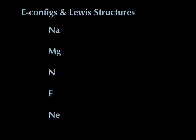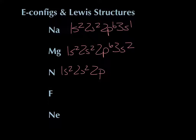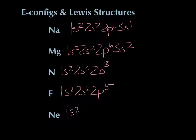Here are the electron configurations. Sodium is 1s² 2s² 2p⁶ 3s¹ — it's in the first column of the third row, so it ends in s¹. Magnesium is 1s² 2s² 2p⁶ 3s² — right next to sodium, so it has two electrons in the s energy level. Nitrogen has only seven electrons: 1s² 2s² 2p³. Fluorine is 1s² 2s² 2p⁵, and neon right next to fluorine is 1s² 2s² 2p⁶.